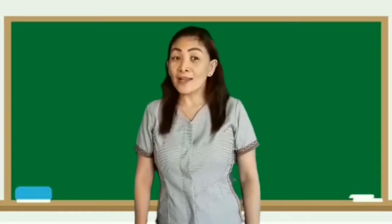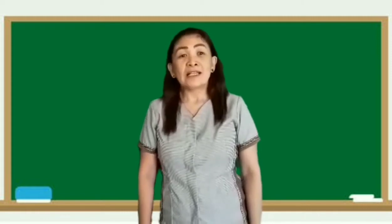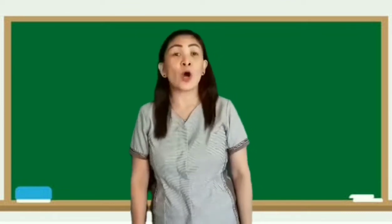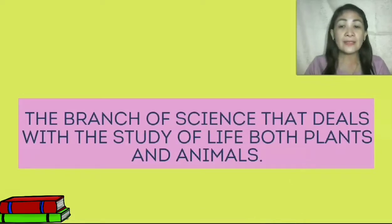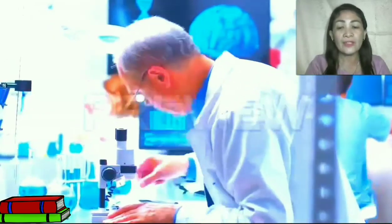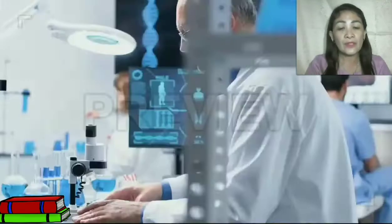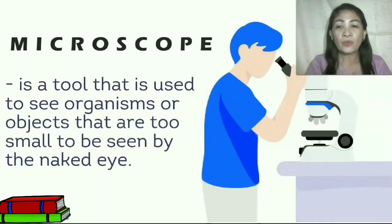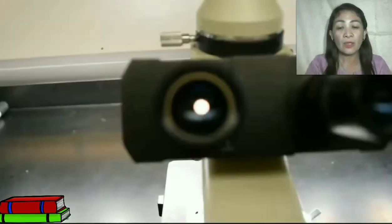Are you ready to learn? So what are you waiting for? Let's explore now the parts and functions of a compound microscope and how it is important to all of us. The branch of science that deals with the study of life, both plants and animals, is known as biology. One of the tools that scientists use to study life is a microscope. With the invention of the microscope, we are able to understand life even better. But what is a microscope? A microscope is a tool used to see organisms or objects that are too small to be seen by the naked eye.